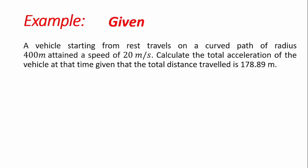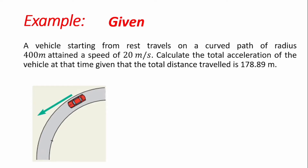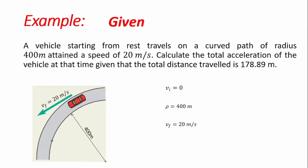We'll begin by identifying what has been given and what is required. The vehicle starts from rest, so initial velocity is zero. It moves on a curved path with radius 400 meters, and attains a final velocity of 20 meters per second. We are asked to calculate the total acceleration of the vehicle, given that the total distance traveled is 178.8 meters.